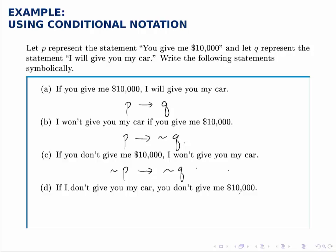For the last one, if I don't give you my car, that's not Q, that's the condition, that implies you don't give me $10,000, which is not P.